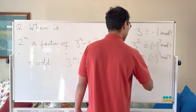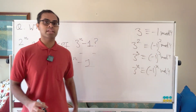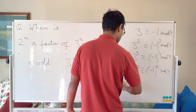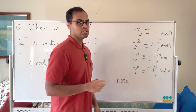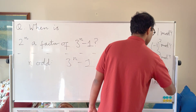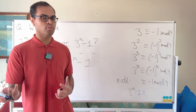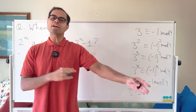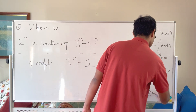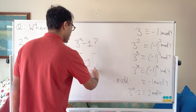In general, 3^n ≡ (−1)^n mod 4. When n is odd, (−1)^n ≡ −1 mod 4. Therefore 3^n − 1 ≡ −1 − 1 = −2 ≡ 2 mod 4. The remainder is not 0, so 3^n − 1 is not divisible by 4 when n is odd.